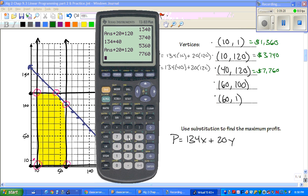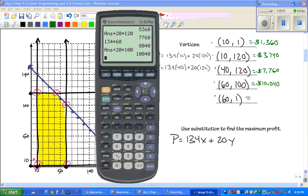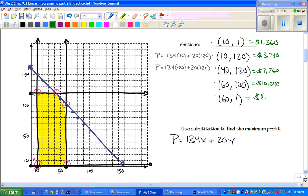So, write down what you're plugging in. 134 times 40 plus 20 times 120. 7,760. And you guys can get the pattern for this. 134 times 60 plus 20 times 100. We get 10,040. And then the last one, which is 134 times 60 plus 20 times 1, which is 20. 8,060.